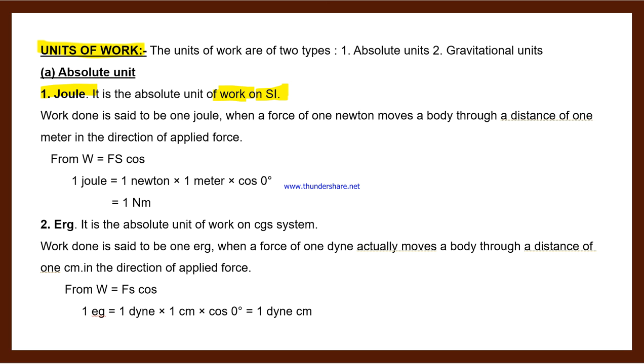First is Joule. It is the absolute unit of work in SI system. Sometimes one mark definitions are asked: define work done or SI unit of work done. Work done is said to be one joule when a force of one newton moves a body through a distance of one meter.